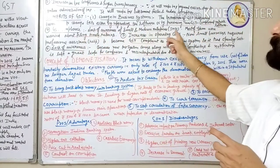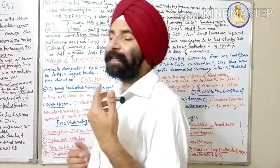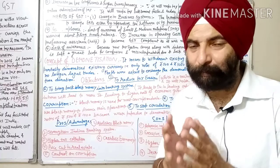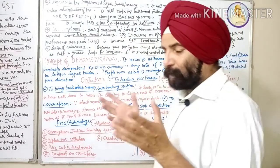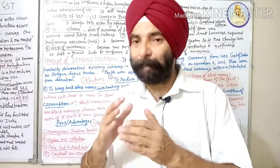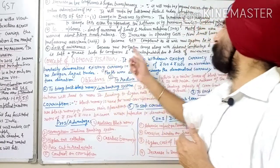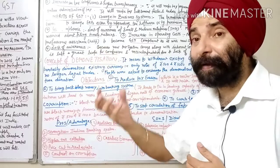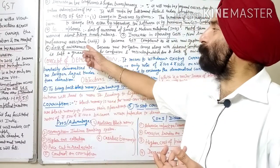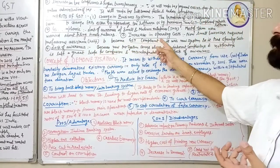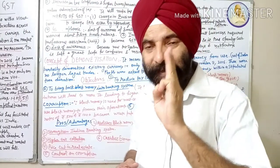The second demerit is the lack of awareness among SMEs — small and medium enterprises. Most of them were worried about filing timely returns because they needed to understand the new compliance process. The third demerit is an increase in operating costs. Small businesses, which were previously tax-pay based, now needed professional assistance to become GST compliant, as it was a new system, which increased their operating costs.